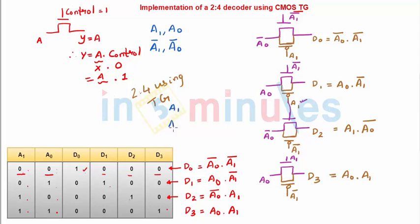And its output is nothing but a1 bar, and this output is nothing but a0 bar. And here, wherever there are a1 bars and a0 bars in the entire circuit, they all would be connected respectively to these points. And this is nothing but my complete 2-to-4 decoder using CMOS transmission gate.